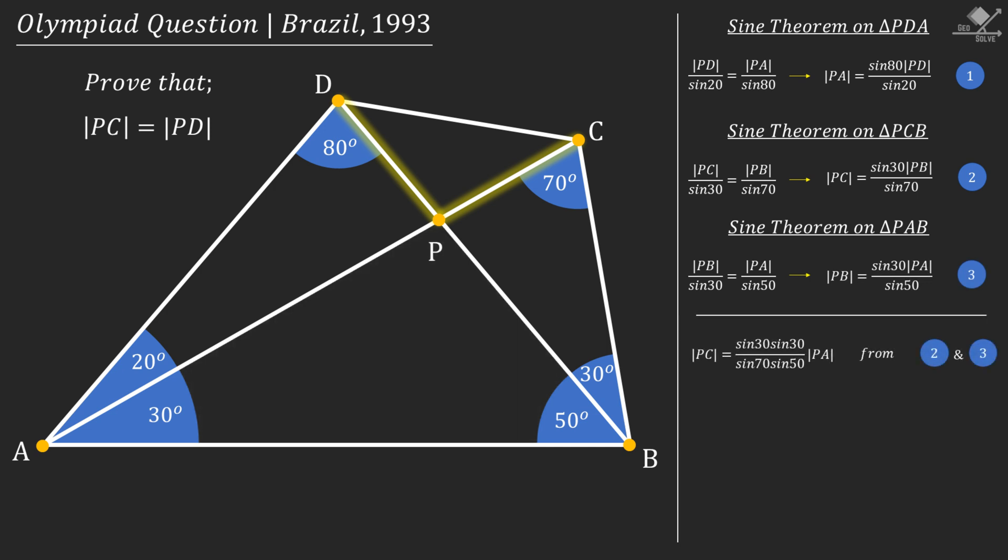Now let's insert equation 3 into equation 2, and instead of PA, let's insert equation 1. Now if we prove that this expression is equal to 1, we will prove that PC is equal to PD and our job is done.